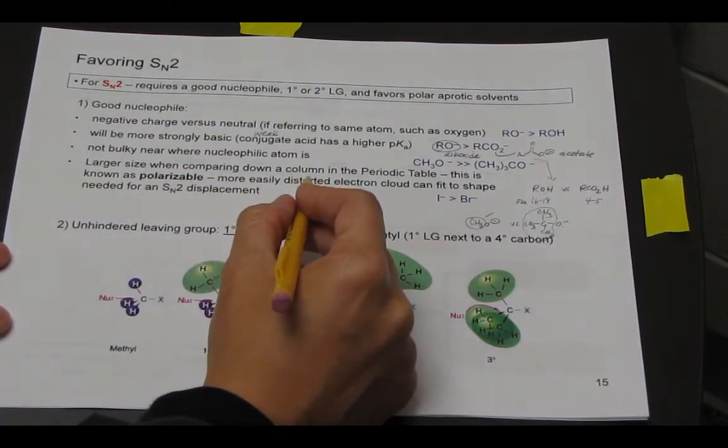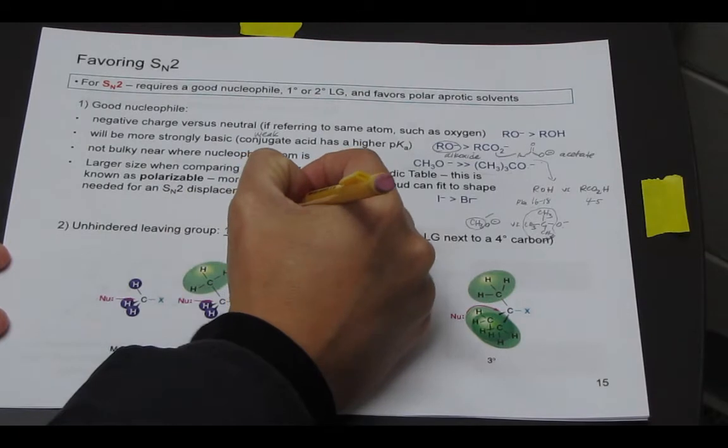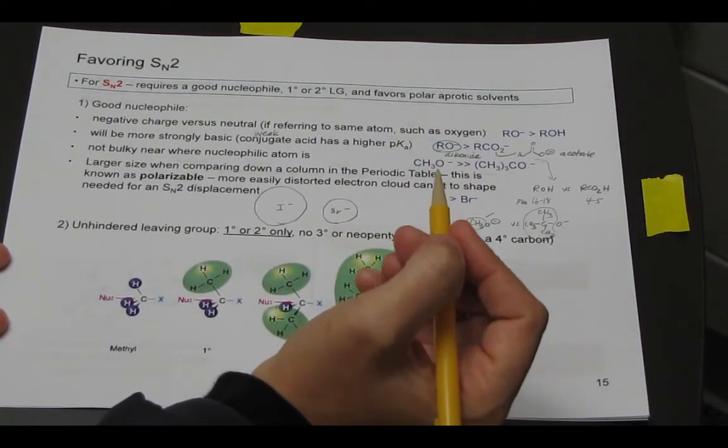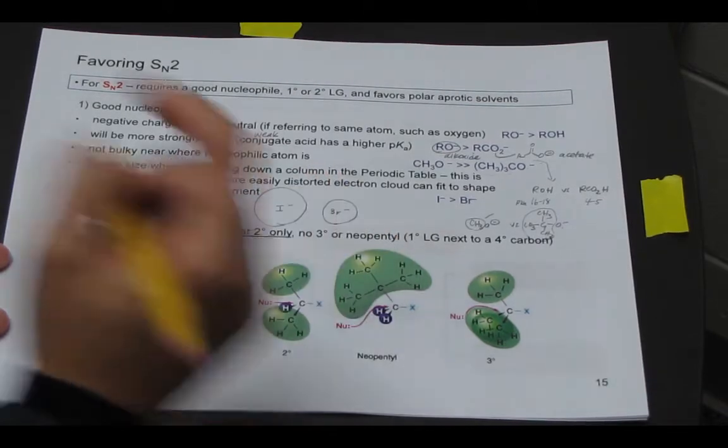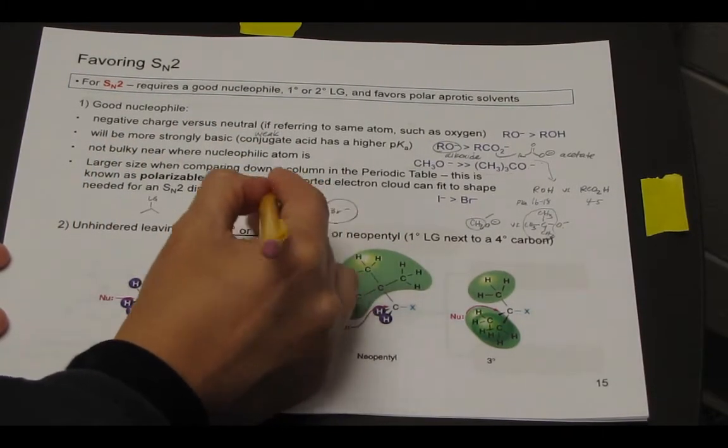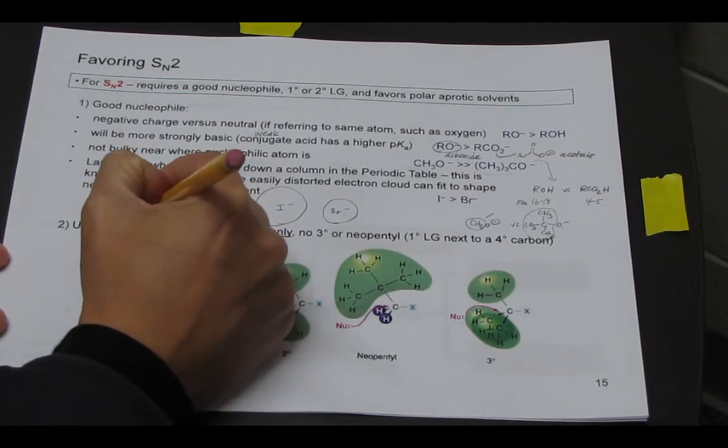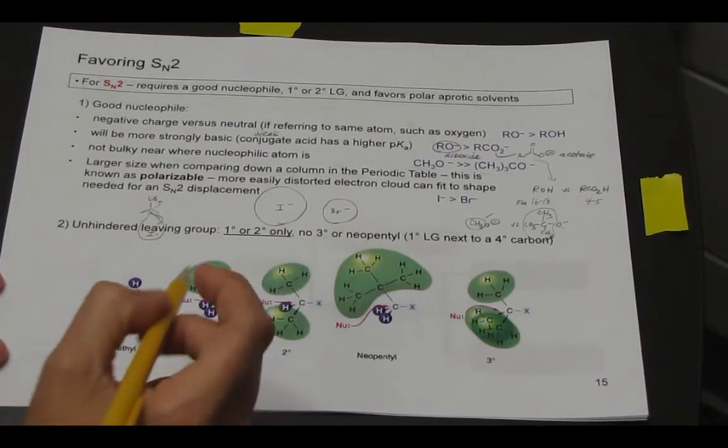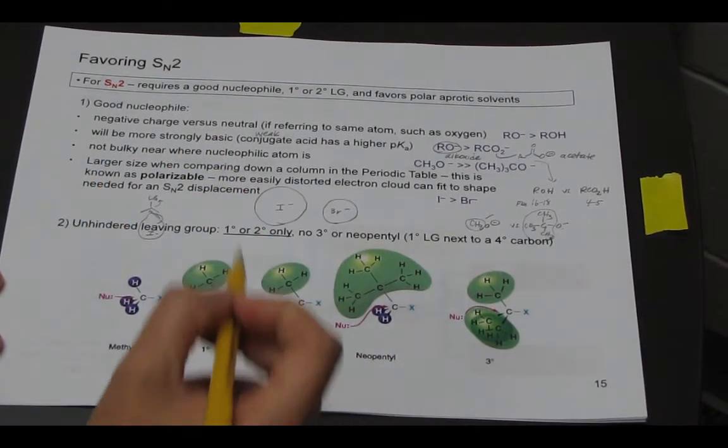And then the last characteristic is if you're looking down the column in the periodic table, you want the larger size because of a term known as polarizability. So even though I minus is going to be larger than Br minus, if I just show the electron clouds, what polarizability means is that you can more easily distort this electron cloud to fit the shape needed for SN2. So for instance if I have my leaving group here, because the iodide has a very large cloud, it can kind of form to the shape needed to displace that leaving group, whereas the bromide would have a harder time, so iodide can better fit the shape to attack. And so if we're looking down the periodic table, we want the larger size as the better nucleophile.